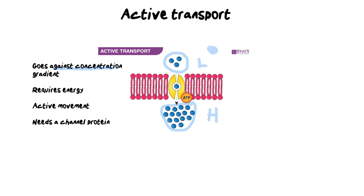The second thing that makes active transport different is that it requires energy, often in the form of ATP molecules. ATP is required because you have to force molecules against the concentration gradient — like the energy needed to push a ball up a hill, as opposed to letting it roll down. This is an active movement with moving mechanisms, and the channel protein involved is not hollow like in facilitated diffusion.